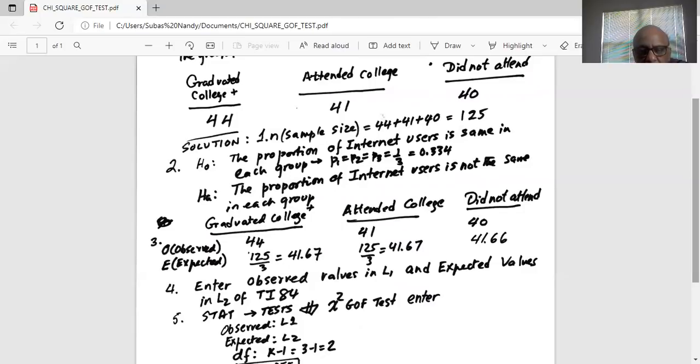Then I will move to the top of L2 and enter the expected values in L2, which is 41.67, 41.67, and 41.67.